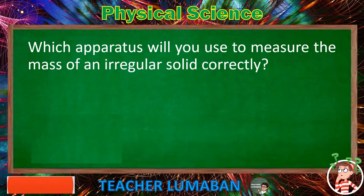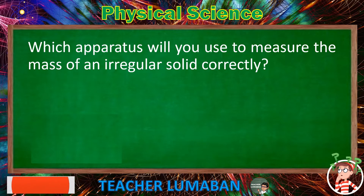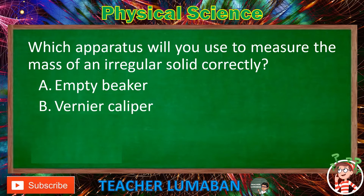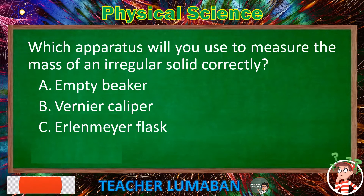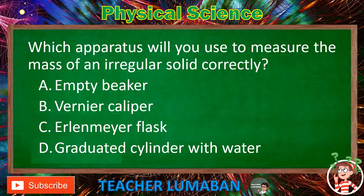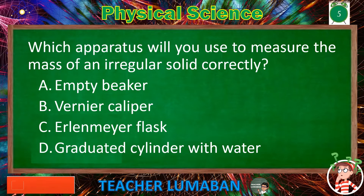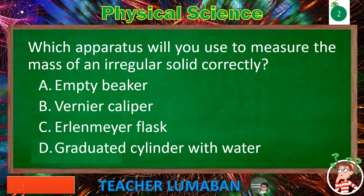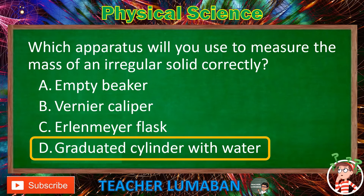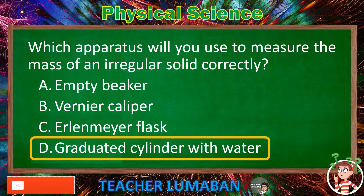Which apparatus will you use to measure the mass of an irregular solid correctly? Letter A: Empty beaker. Letter B: Vernier caliper. Letter C: Erlenmeyer flask. Letter D: Graduated cylinder with water. The correct answer is letter D, graduated cylinder with water. The graduated cylinder with water apparatus will be used to measure the mass of an irregular solid correctly.